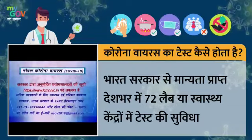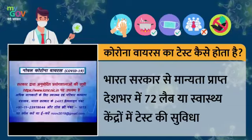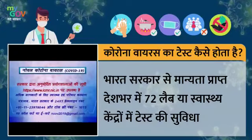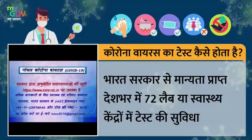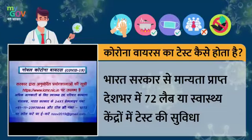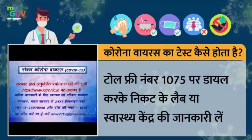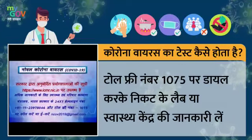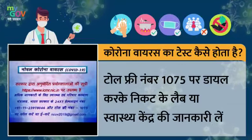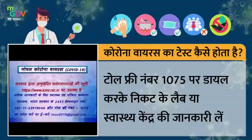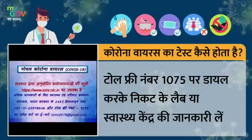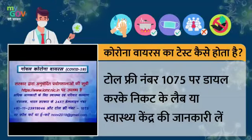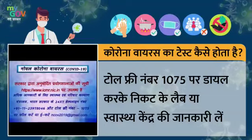Today's topic is about testing labs, Prayokshala or Swastika Kendra, and the government is trying to increase the number of these centers. If you have a center or Swastika Kendra or Prayokshala, you need to know about a toll-free number, which is 1075. You can dial 1075 for assistance.